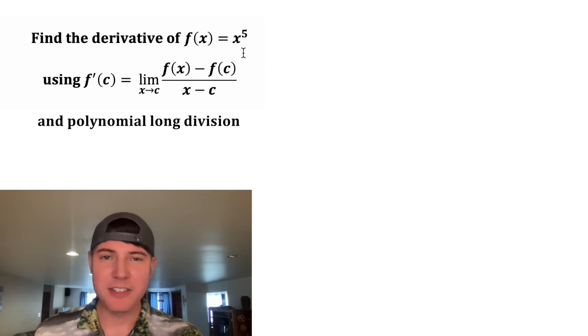It says, find the derivative of f(x) = x^5 using f'(c) = lim(x→c) [f(x) - f(c)]/(x - c). And it wants us to do it by using polynomial long division.